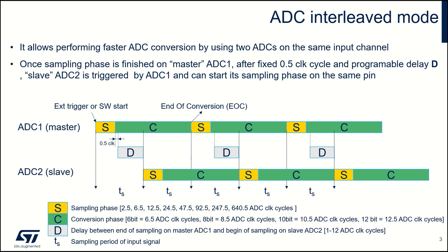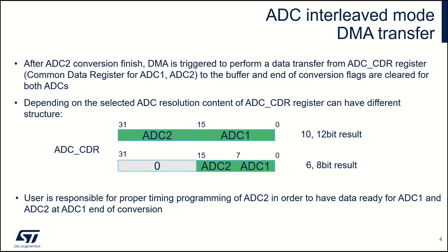Today we will use 12-bit ADC resolution as the highest one. To recap: ADC master starts, then the sampling stage, then 0.5 ADC clock cycle fixed delay, then a programmable delay in clock cycles, and then automatic — meaning by hardware — start of the ADC slave. With two ADCs active, we have two data registers: one for ADC1 and one for ADC2. The most efficient way in terms of performance and handling the output data stream from the ADC is ADC-DMA transfer.